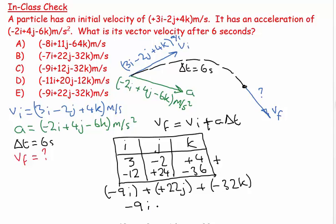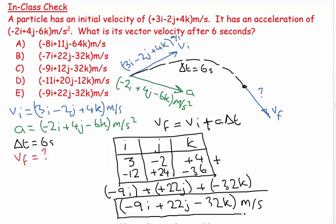That's a bit clumsy, so let's just put down minus 9i plus 22j minus 32k, and it's a velocity so that's going to be meters per second. That is my V final vector in three-dimensional space: minus 9, plus 22, minus 32. We just did a kinematics problem in three dimensions.